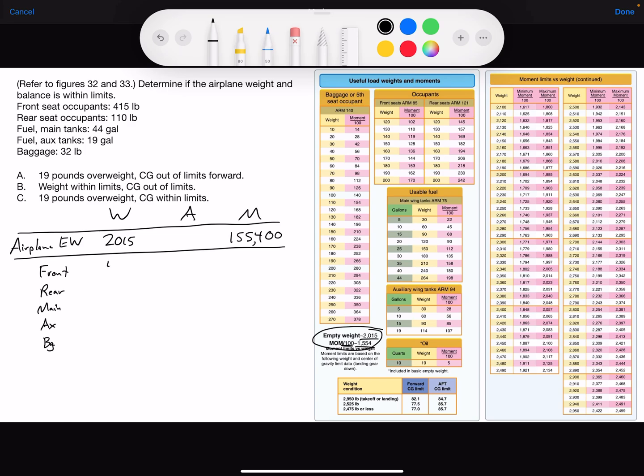Front seat 415, rear seat 110 pounds. Main tank we have 44 gallons, take 44 multiply it by 6 pounds per gallon that gives you the weight of 264 pounds. Aux tank they tell us we have 19 gallons, 19 multiplied by 6 pounds per gallon, that's a weight of 114 pounds. Baggage they give us 32 and then we'll get a total.